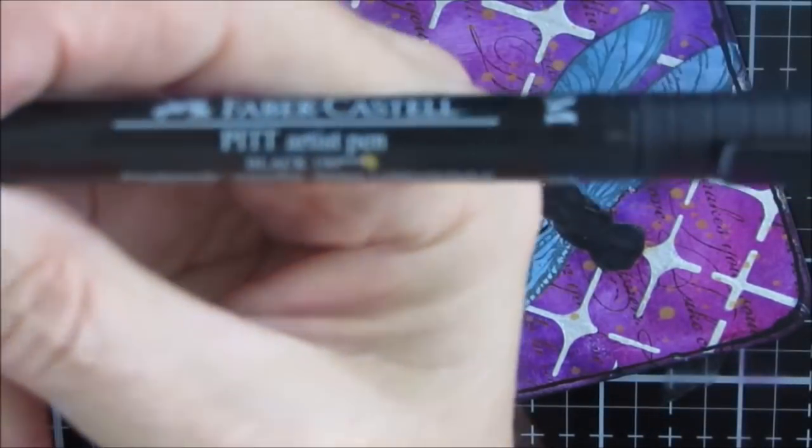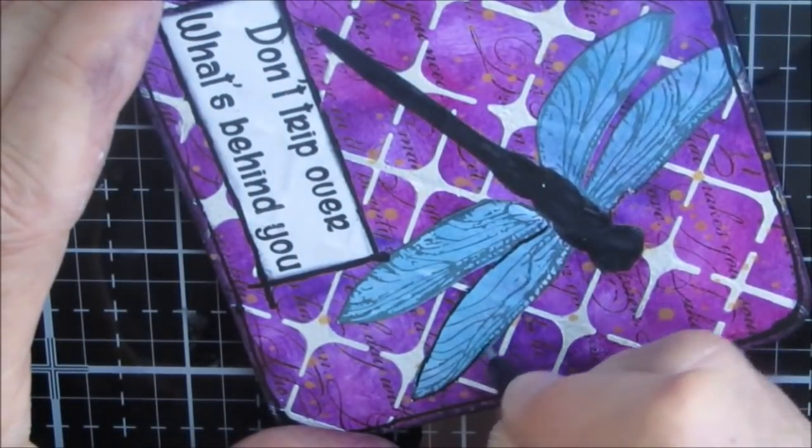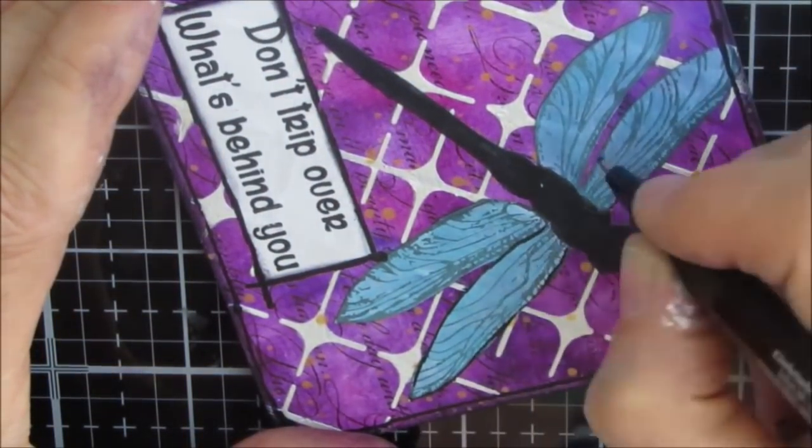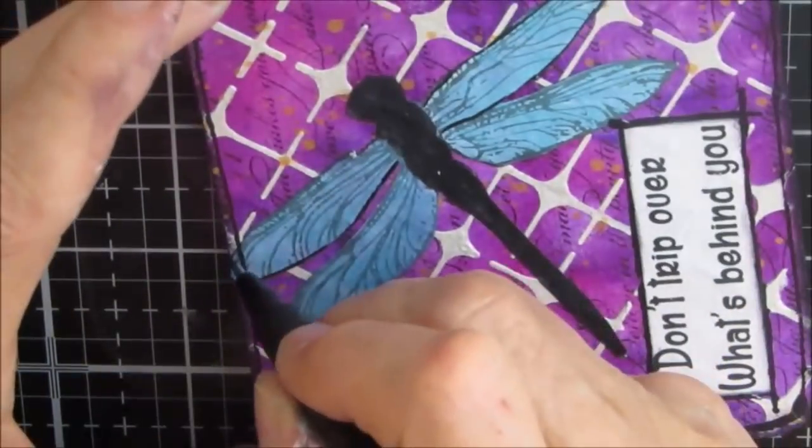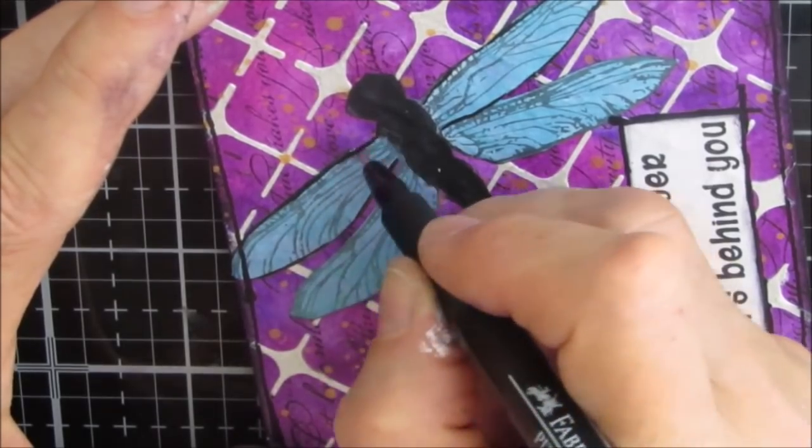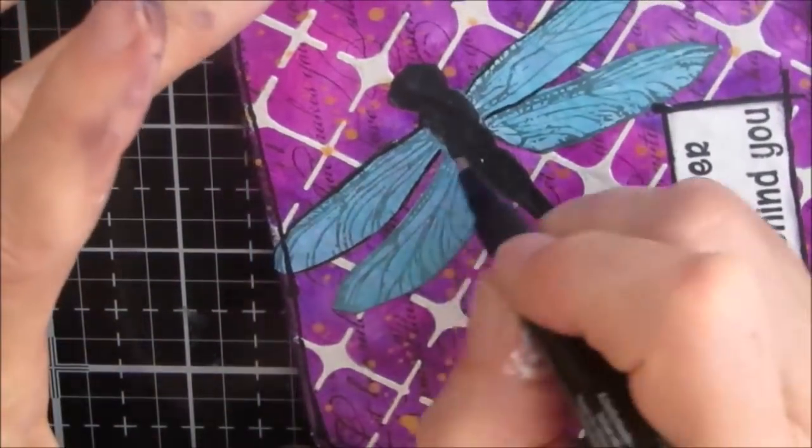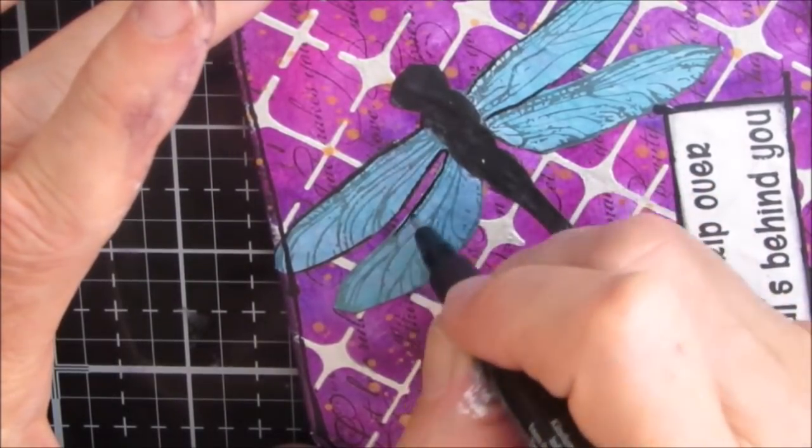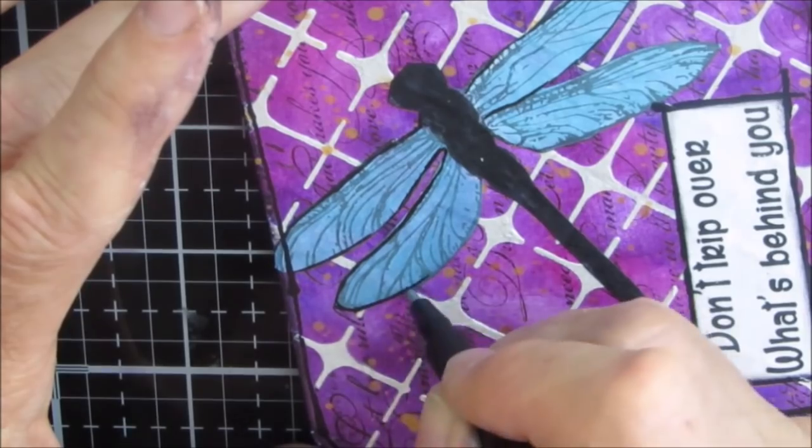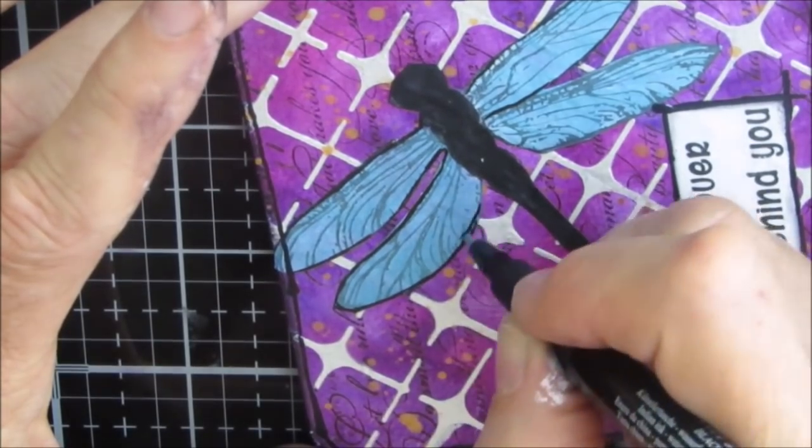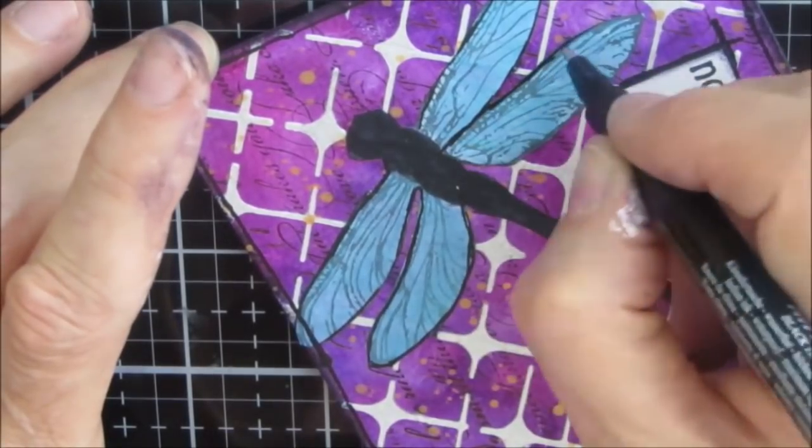I'm using a Faber-Castell Pit Pen and earlier I talked about how you could avoid doing this step by painting on the paper first your color and then stamping on top of the color. I didn't do that so I lost some of the black and I wanted to bring back the black so I'm just using the Pit Pen. It is permanent when dry which is why I've chosen that pen and I believe it's a medium tip.